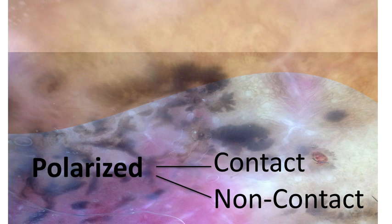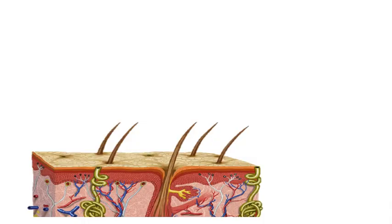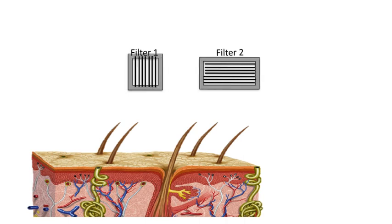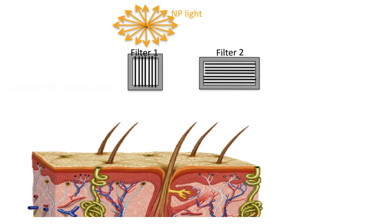Now let's move on to polarized dermoscopy, which can be performed in the contact and non-contact mode. Polarized dermoscopy is usually created in a process called cross-polarization. The dermatoscopes transform non-polarized light into polarized light using filters — usually two filters that are perpendicular to each other. Starting with a source of non-polarized light with waves vibrating in different directions, only those light waves vibrating in the same plane as filter one will be able to pass through it, producing our polarized light.